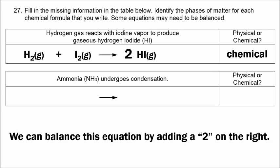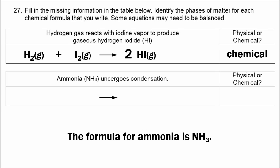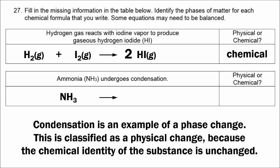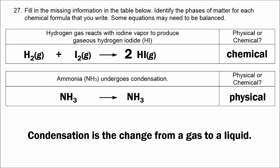Now we have ammonia undergoing condensation. The formula for ammonia is NH3. Condensation is a phase change and therefore a physical change, so we still have NH3 on the right. Condensation is the change from a gas to a liquid, so gas is on the left and liquid is on the right.